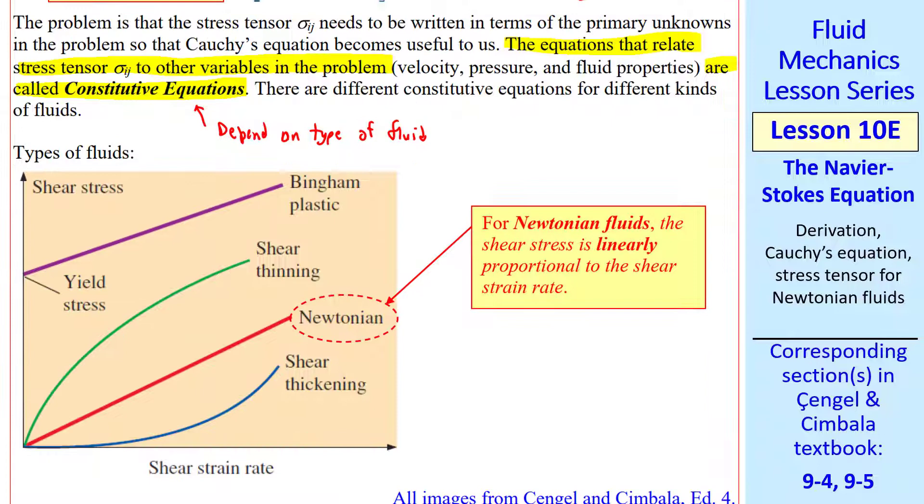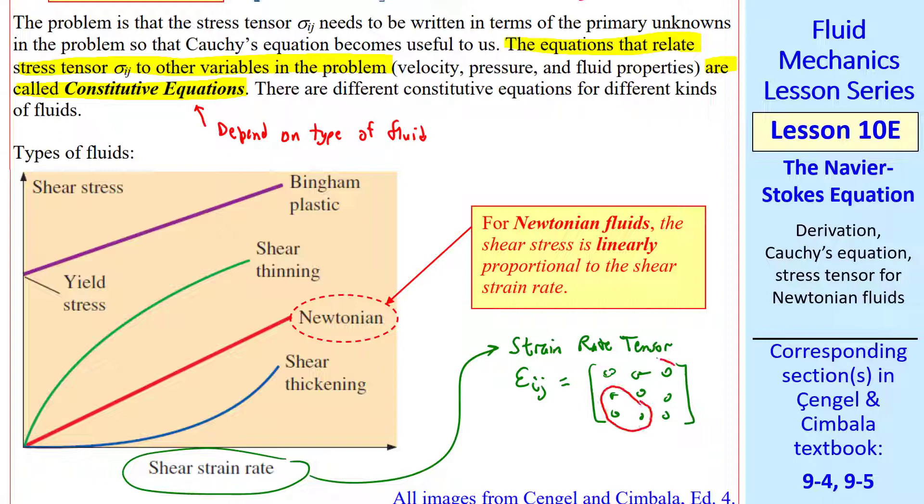I show here four common types of fluid. In this plot, we plot shear stress as a function of shear strain rate. Students should recall the strain rate tensor, which we discussed in a previous lesson and called epsilon ij. Remember that it was a nine-component tensor or a second-order tensor. The shear strain rates are the off-diagonal components of this strain rate tensor. Now let's look at these four different kinds of fluids. A shear thickening fluid is one where shear stress increases more rapidly as the shear strain rate increases. So the curve tilts up like this. It's not linear. A shear thinning fluid has the opposite behavior, where shear stress increases more slowly as shear strain rate increases.